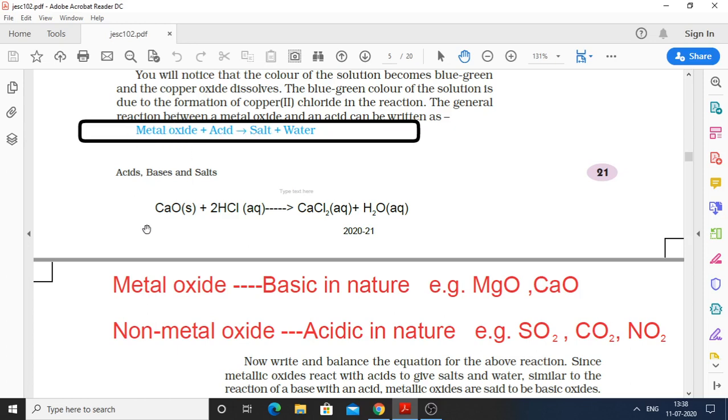For example, calcium oxide plus hydrogen chloride. Hydrogen chloride is acid and calcium oxide is metal oxide. They form calcium chloride which is salt, and water. Water is aqueous, it's a liquid.